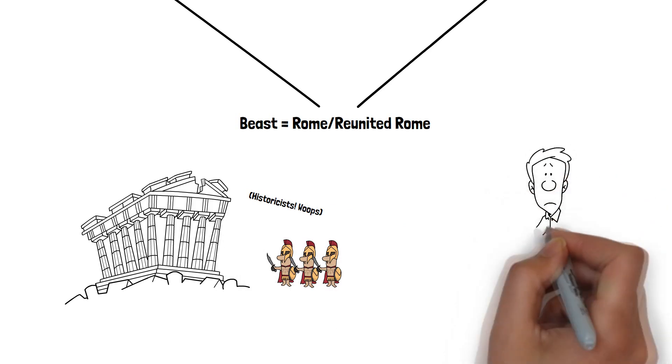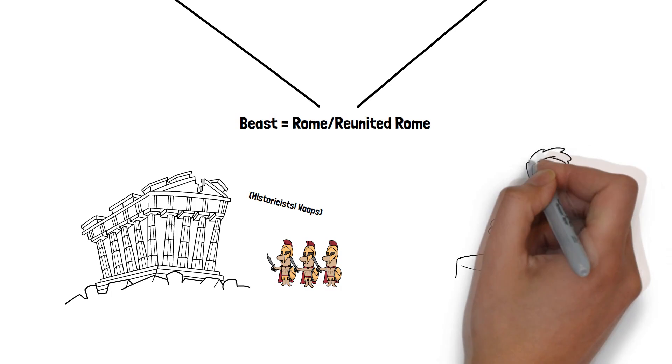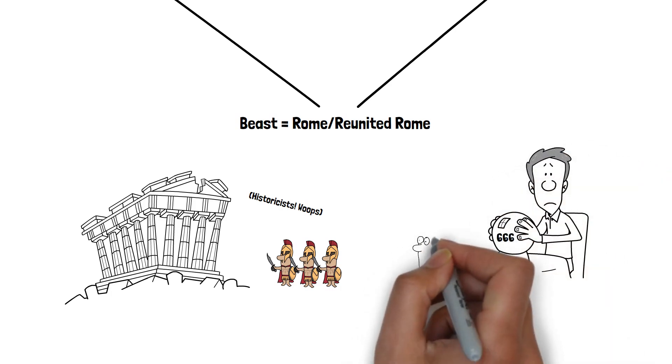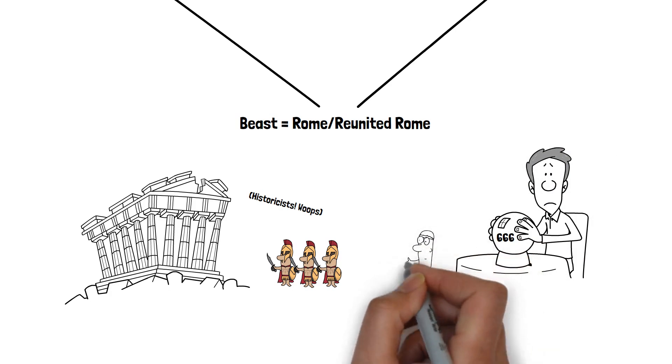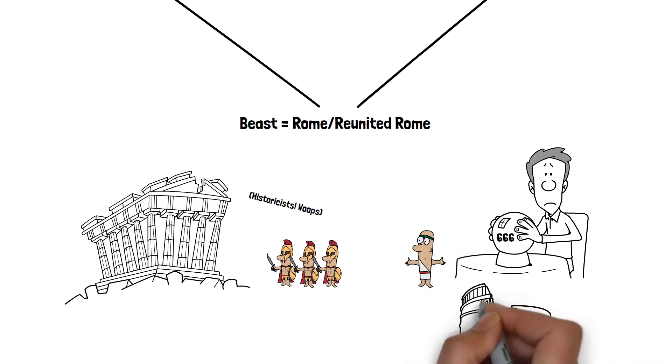And for futurists, the reasoning is a little more splintered, with some groups arguing that the number of the beasts provides the necessary justification. This being due to some believing that the number 666 can be calculated to Nero Caesar, while others see a rebirthed Roman Empire as being the seat of the Antichrist, of which they believe the Beast represents.